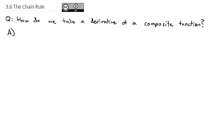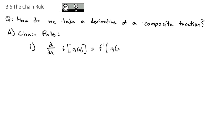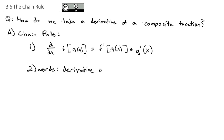The short answer is we use something called the chain rule, which officially states that the derivative of a function with another function inside it is equal to the derivative of the outside function, where the inside stays the same, times the derivative of the inside function. In words, the chain rule is: take the derivative of the outside times the derivative of the inside.